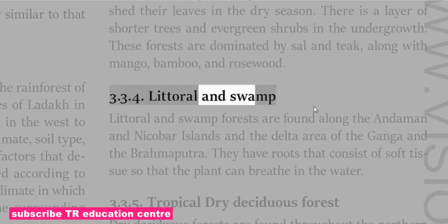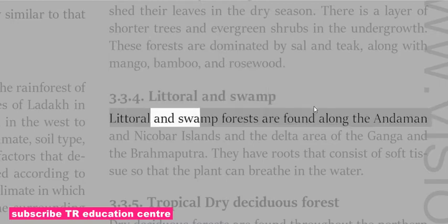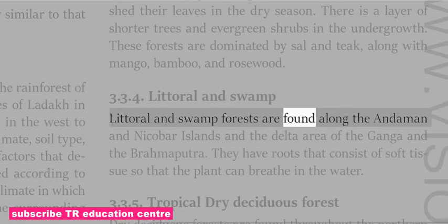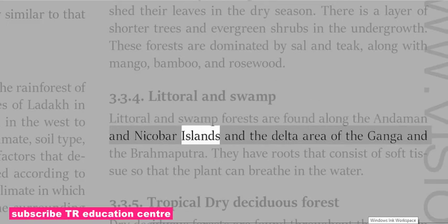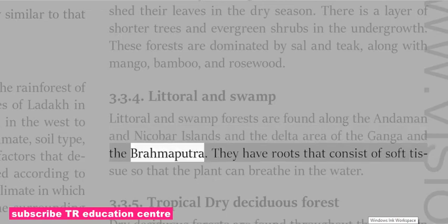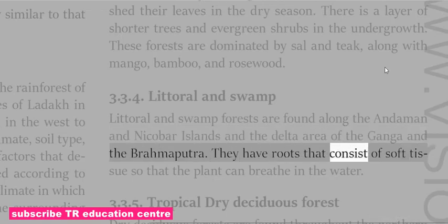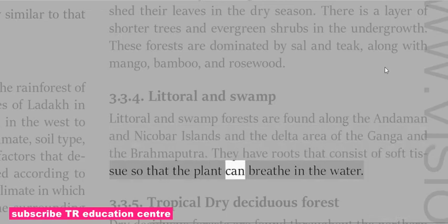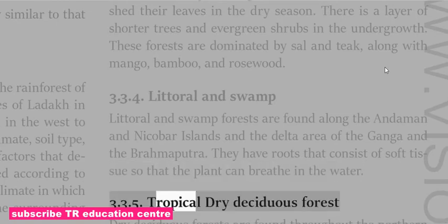Littoral and Swamp Forests are found along the Andaman and Nicobar Islands and the delta area of the Ganga and the Brahmaputra. They have roots that consist of soft tissue so that the plant can breathe in the water.